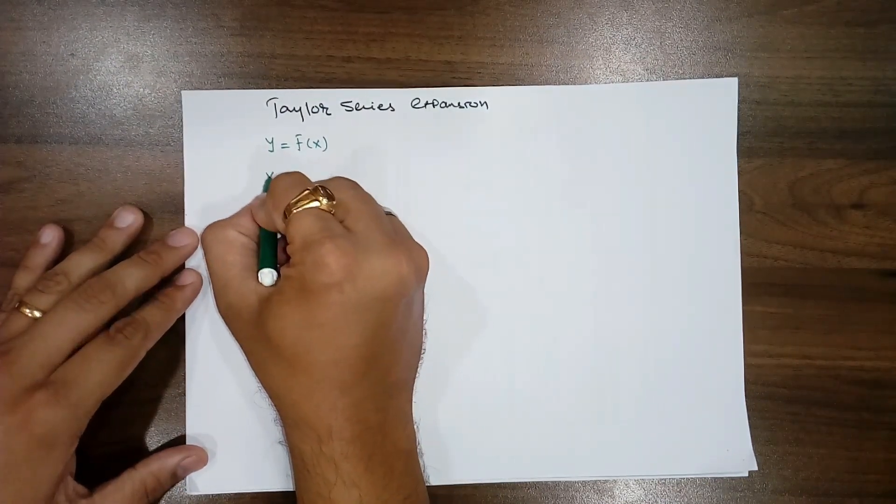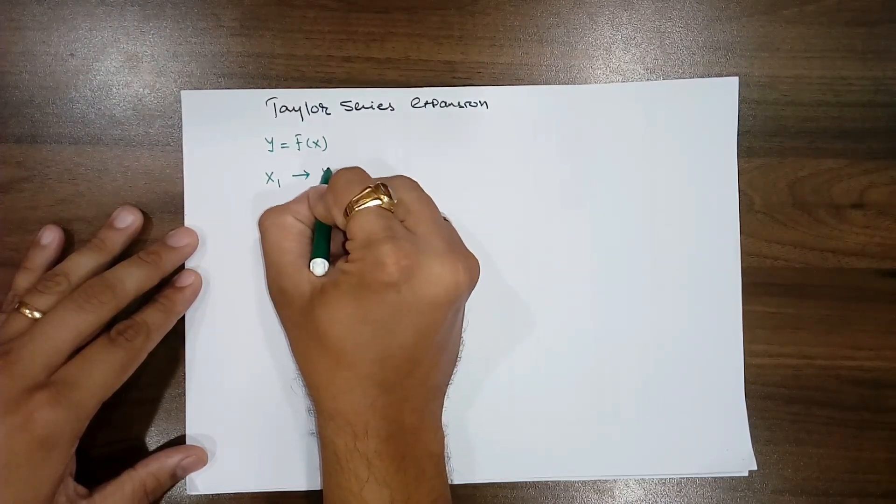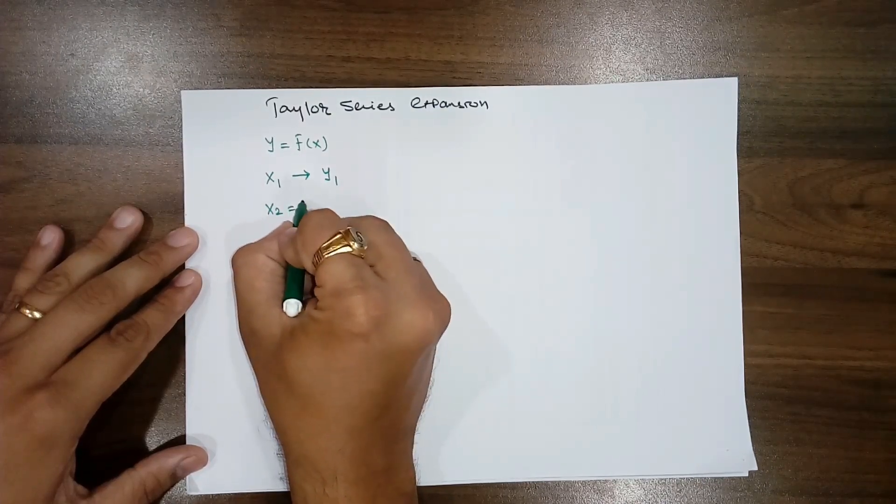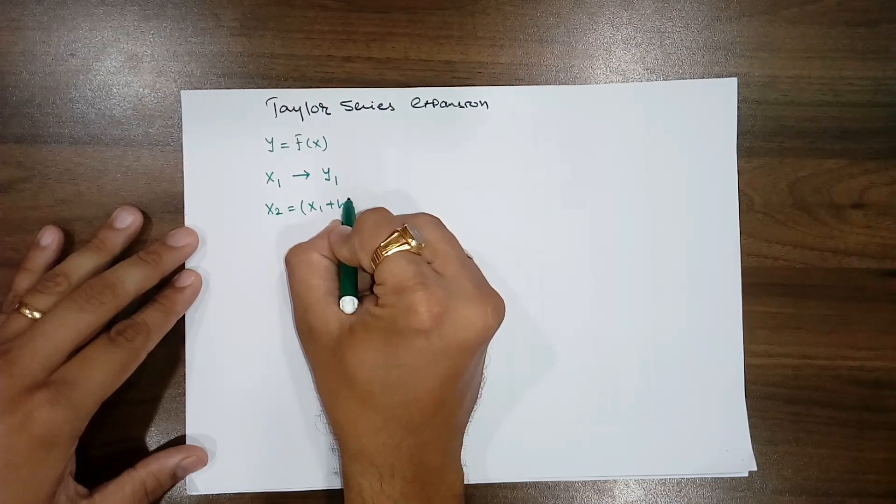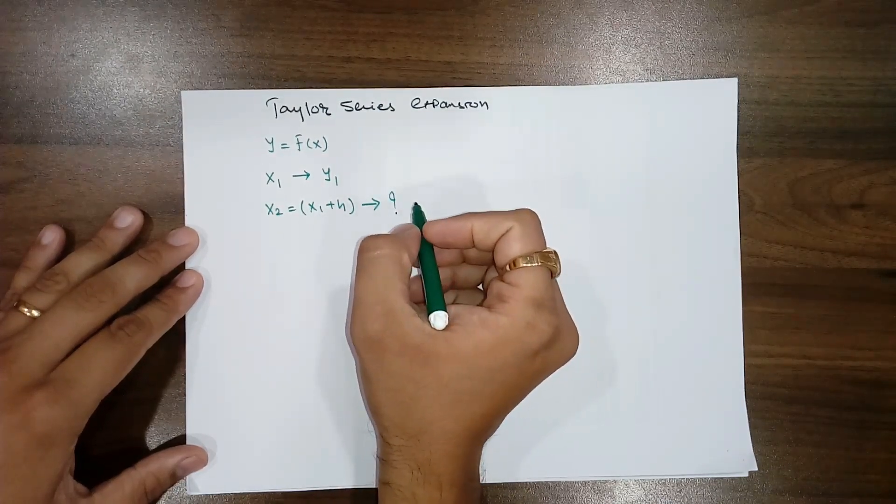If you know the value of x1, this is y1, and if x2 which is equals to x1 plus h is given to you, and if you are not able to know the value of y2.